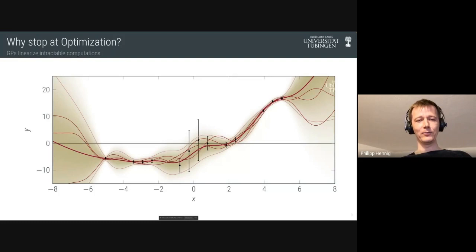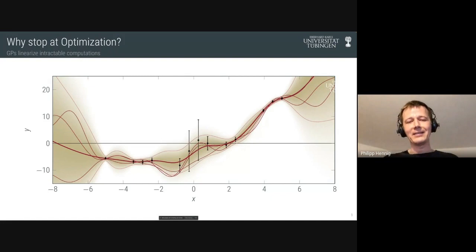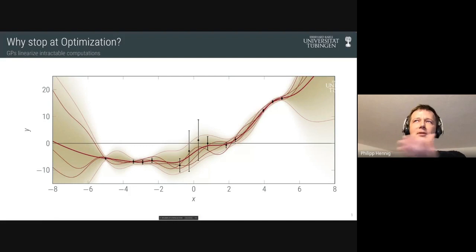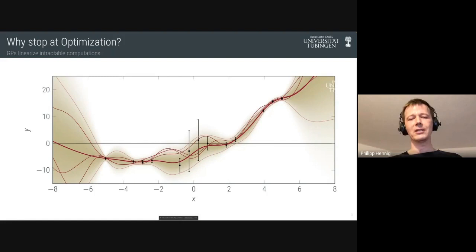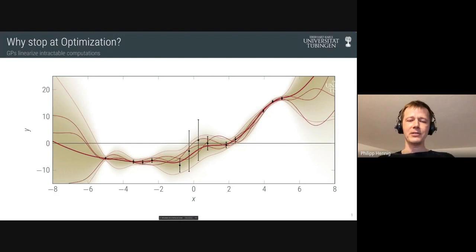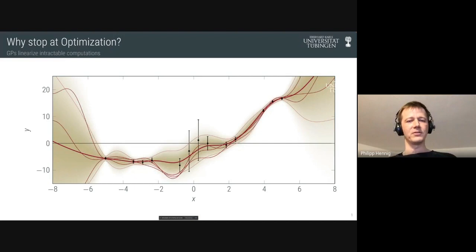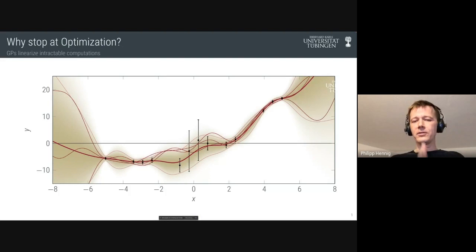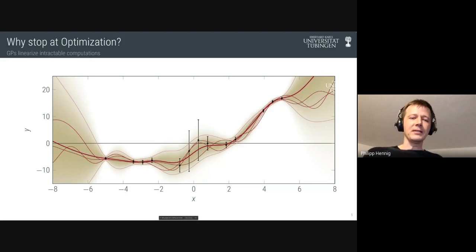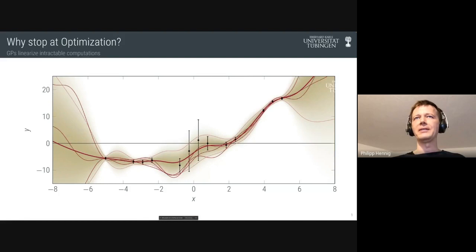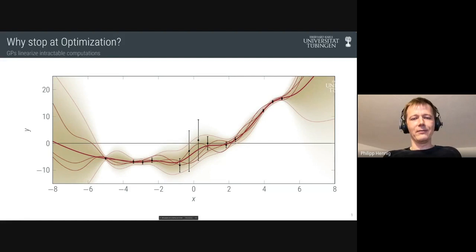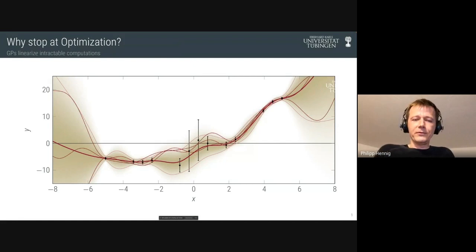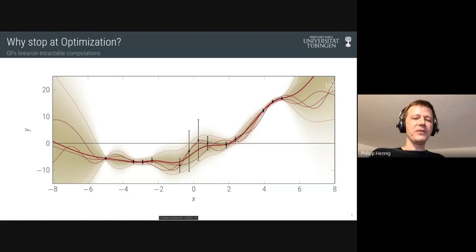Bayesian optimization experts are first and foremost Gaussian process modeling experts. If I show a group of you a slide, within seconds everyone knows what's going on — what kind of model I'm using, what kernel, what likelihood, and what computation I've performed. To me, Bayesian optimization is about modeling a typically deterministic intractable function with a probabilistic model like a Gaussian process, and then refining that model over time in an active fashion. Notice that description didn't really involve the word optimization.